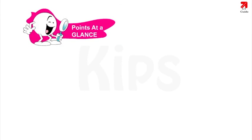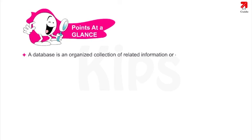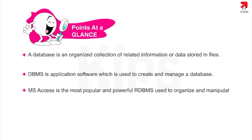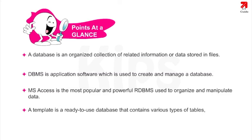Let's quickly glance through the key points discussed in this chapter. A database is an organized collection of related information or data stored in files. DBMS is application software used to create and manage a database. MS Access is the most powerful RDBMS used to organize and manipulate data. A template is a ready-to-use database that contains various types of tables, queries, forms, etc. needed to perform a specific task.